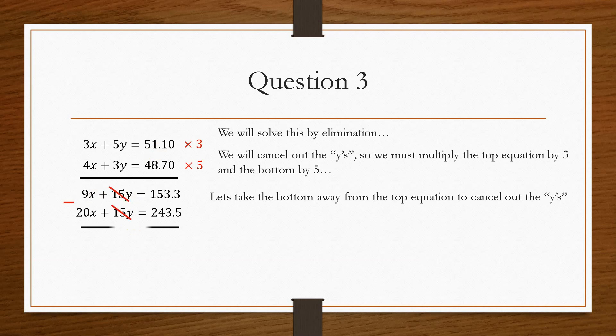So we'll do the bottom take away the top to cancel out the y's. And that will get rid of the 15 y's. And that will take us 20x minus 9x is 11x. And 243.5 take away 153.3 is 90.2. If we divide that by 11, we get £8.20.